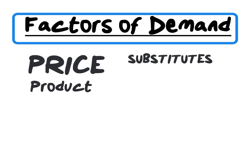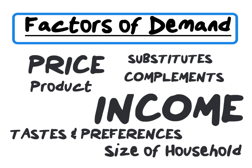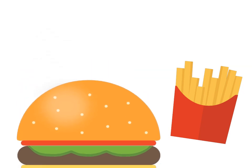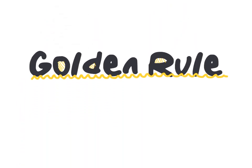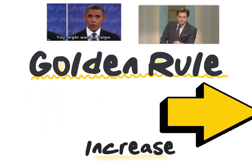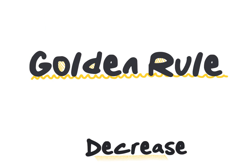The remaining factors — such as the price of substitutes, complements, the level of income, tastes and preferences, and household size — will lead to a shift of the entire demand curve. To illustrate an increase and decrease in demand, we will use a burger as our example. The complement good will be french fries and the substitute product will be a sandwich. The golden rule: an increase always leads to a rightward shift and a decrease always leads to a leftward shift of the demand curve.